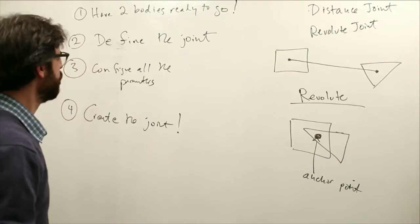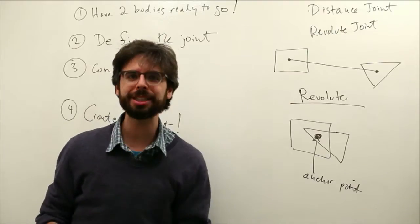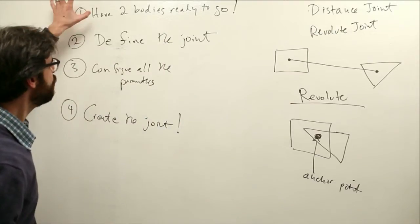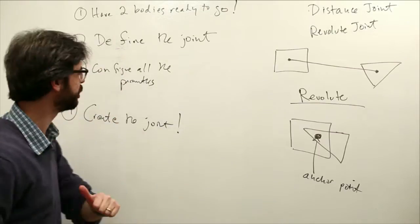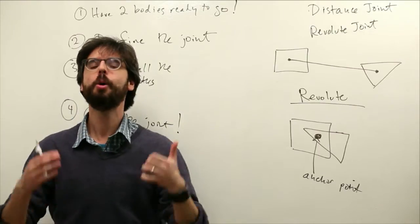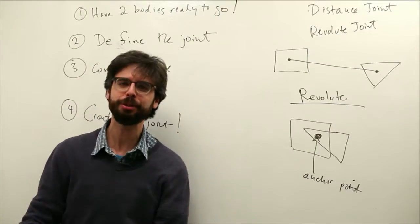Okay, so how do we do that? Well, we do the same exact thing we did with the distance joint. We have two bodies ready to go. We define a joint definition, a revolute joint definition, and then we set all the parameters.